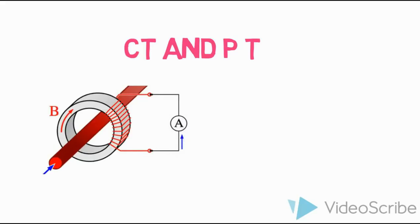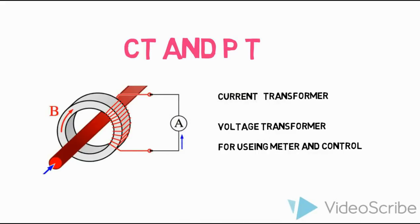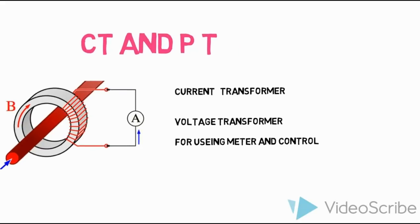Next is CT and PT — Current Transformers and Potential Transformers. The current transformer is used for current measurement. Potential Transformers are used for voltage control, with step-up and step-down functions.